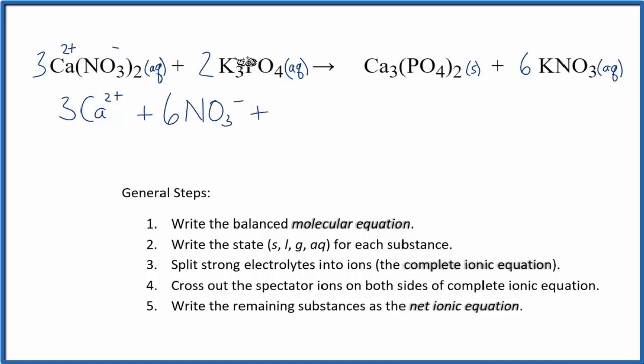For the potassium phosphate, potassium is in group one. It has a one plus charge. Phosphate ion, that's three minus. So for our potassium ion, that K+, we have three of them times two. So we have six of those.